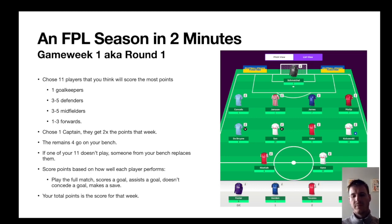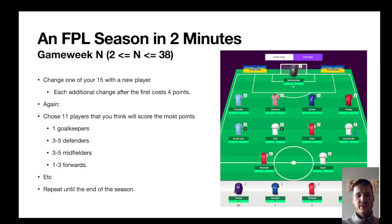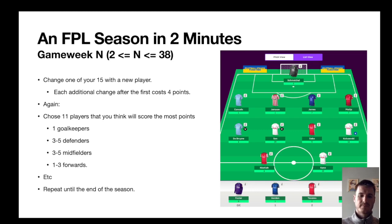Players get points based on whether they score goals, how many minutes they play, assists, and things like that — and here's an example game week with points shown below player names. For the rest of the season you can change one of your 15 players each week for free, but each additional change costs four points from your total score. You then select 11 players for the next game week and repeat for 38 game weeks.